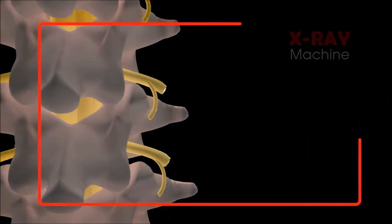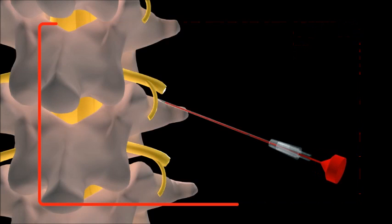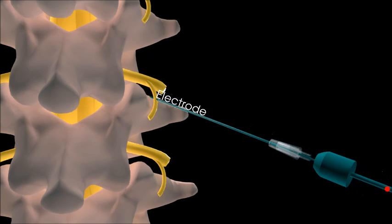He will then use a special x-ray machine to guide the radiofrequency needle accurately near the irritated medial branch nerve. A radiofrequency electrode is inserted through the needle and a small electric current is passed to test the position of the needle.